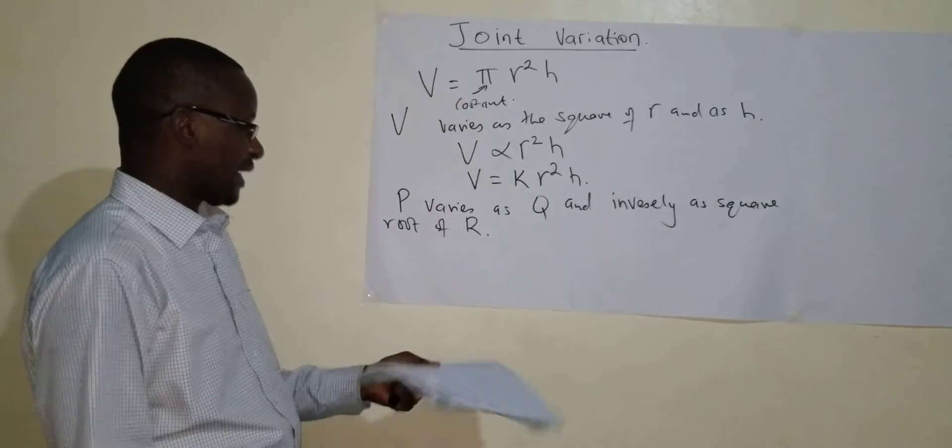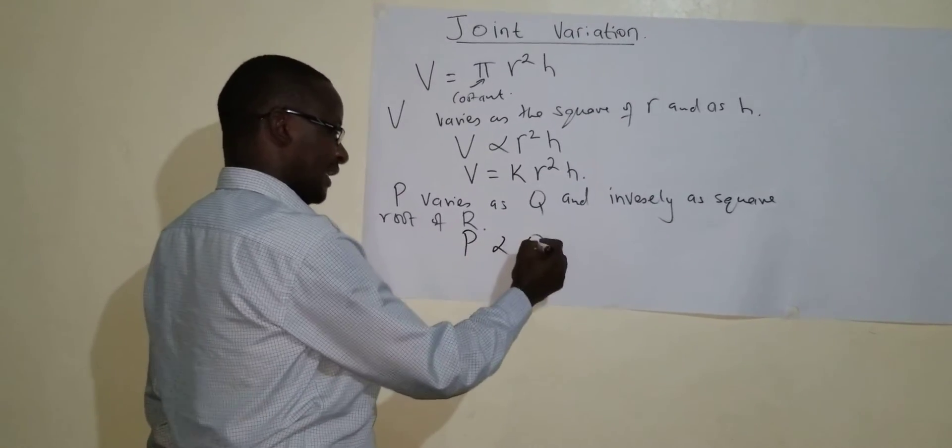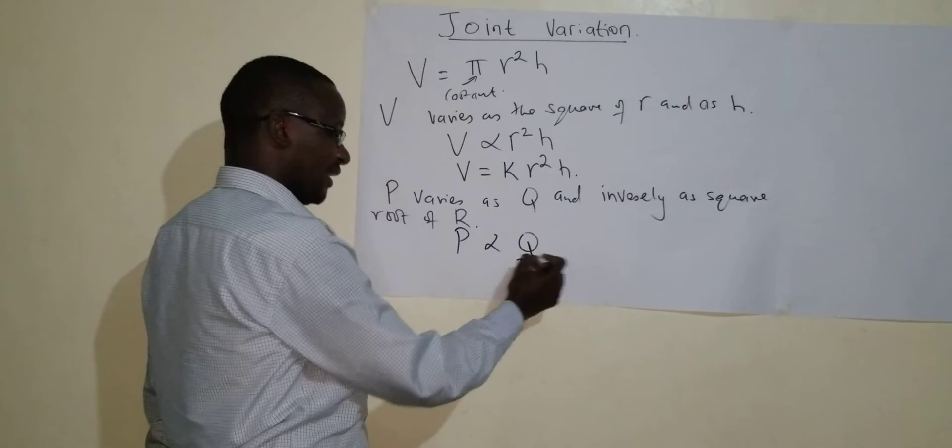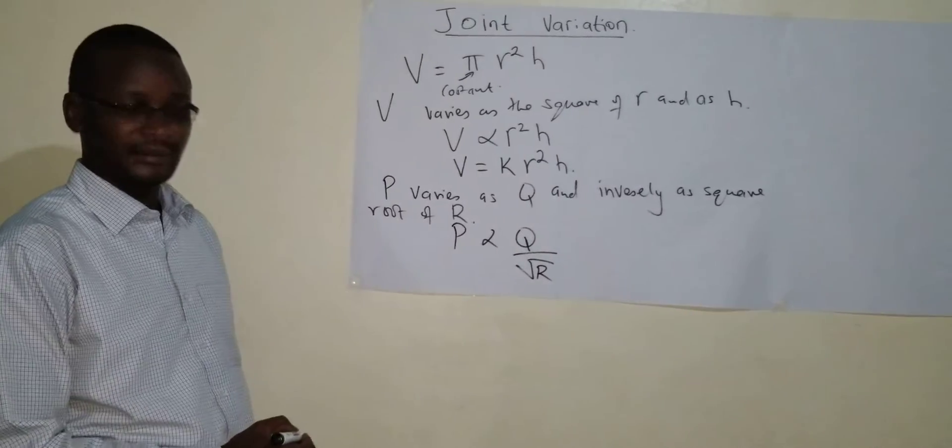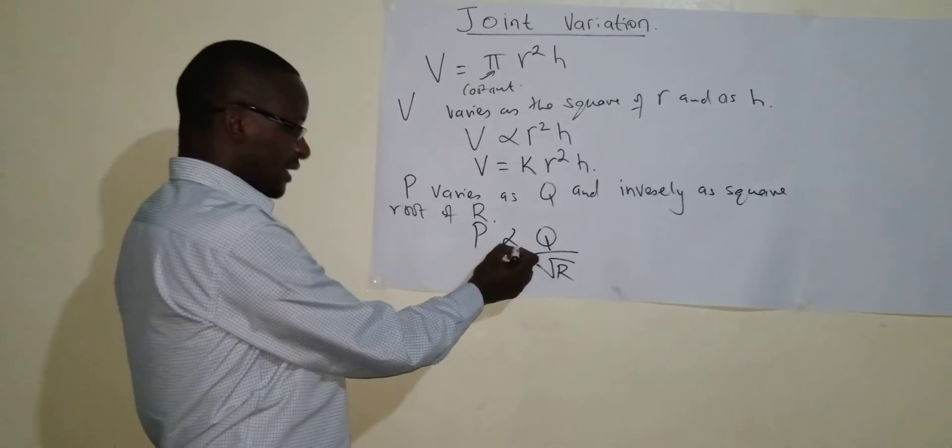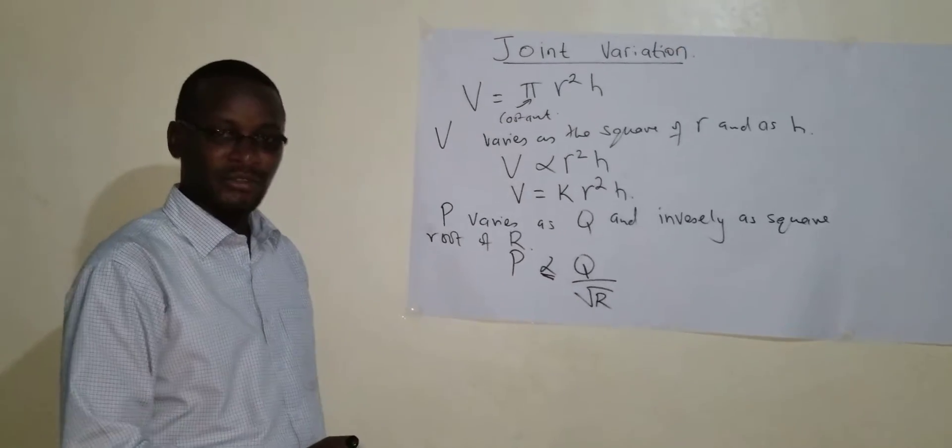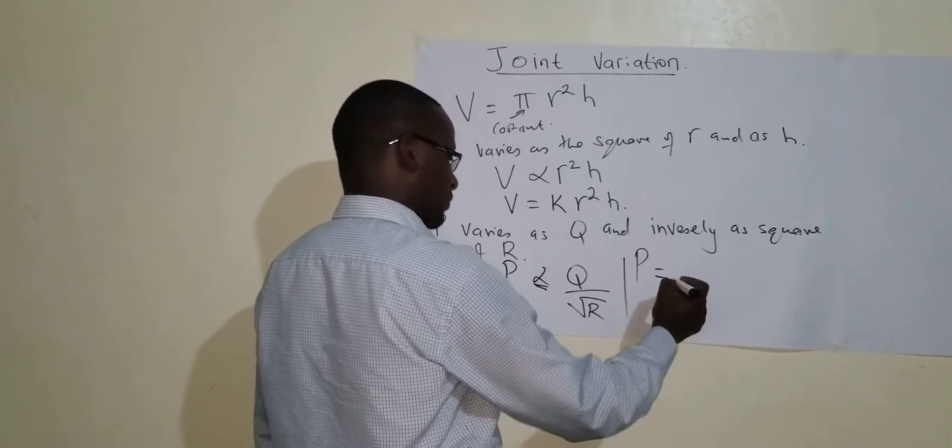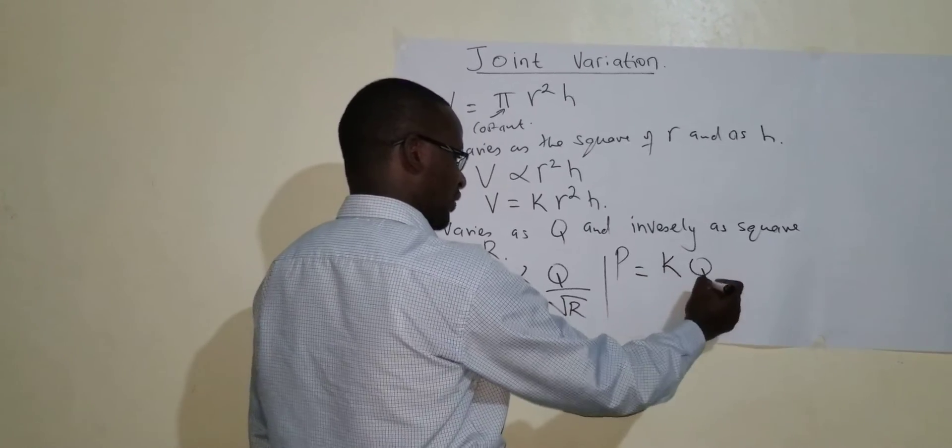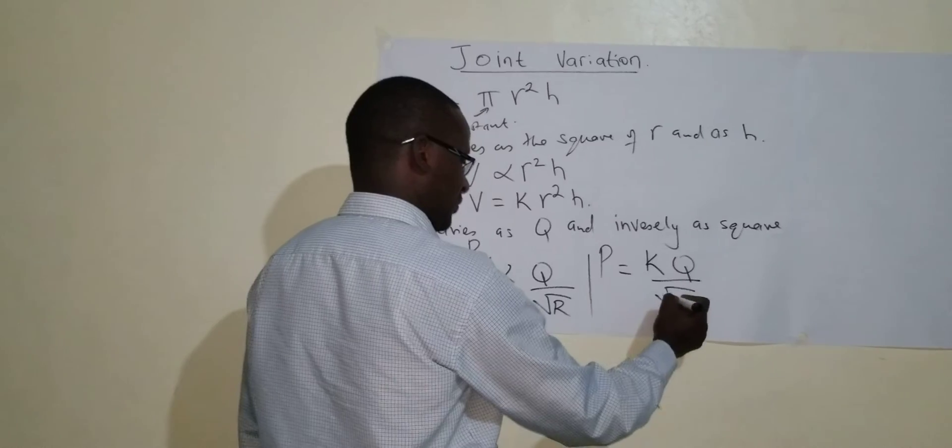So we are going to write that as P varies directly as Q and inversely as square of R. So when you remove this proportionality sign, introduce the equal to sign,